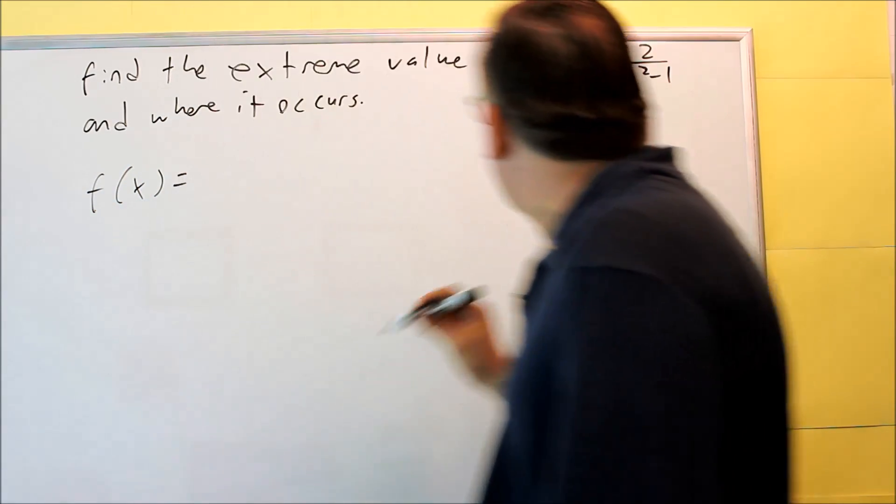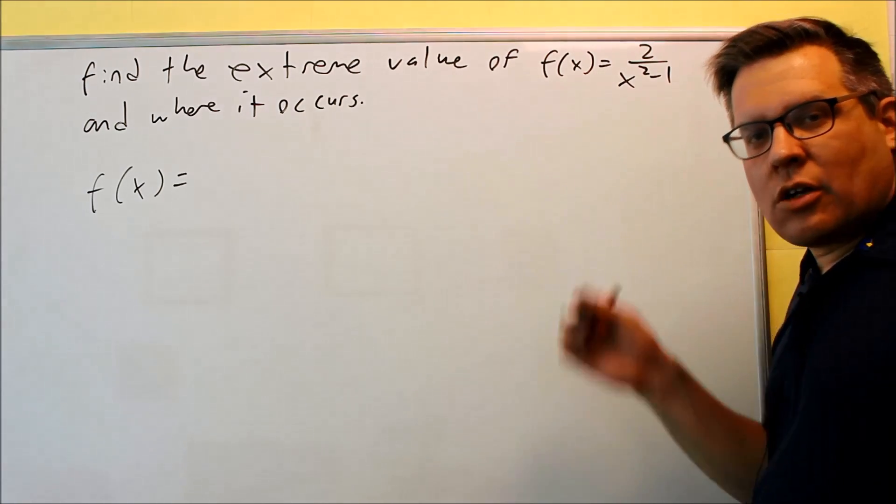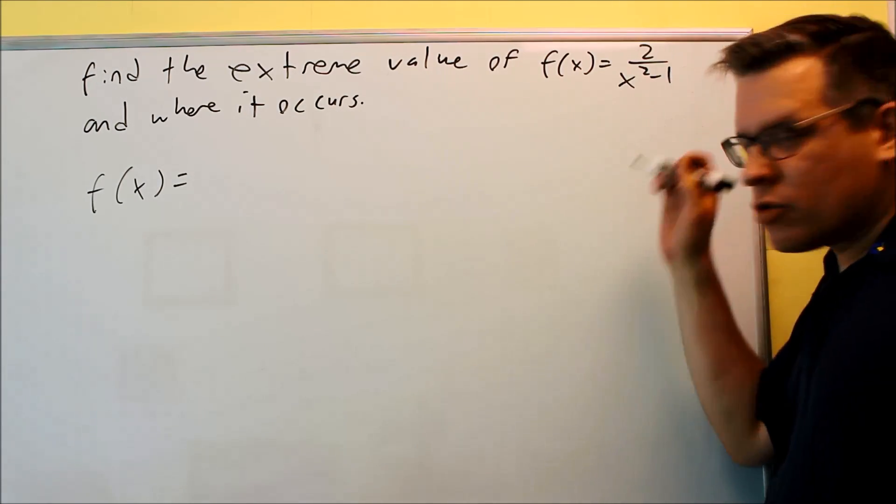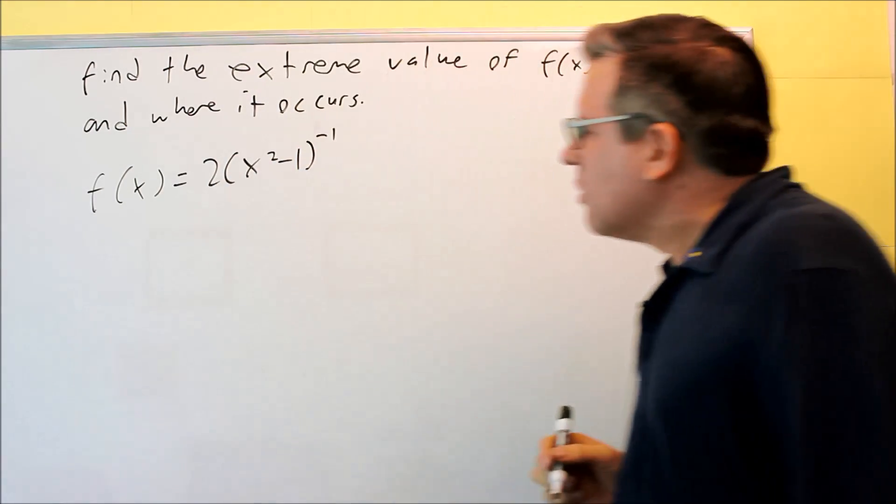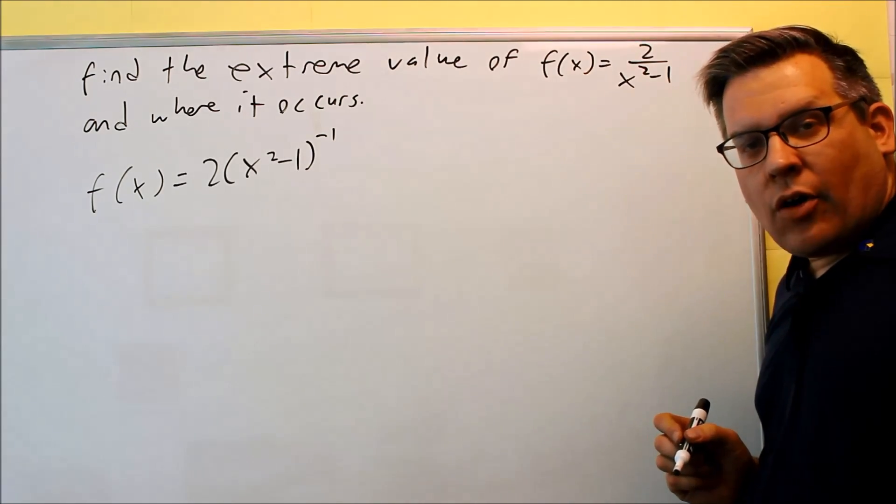Now, before I do the derivative, let me rewrite this so I can apply the chain rule instead of using the quotient rule. I'll write that problem this way. I'll write that to the negative 1 power.